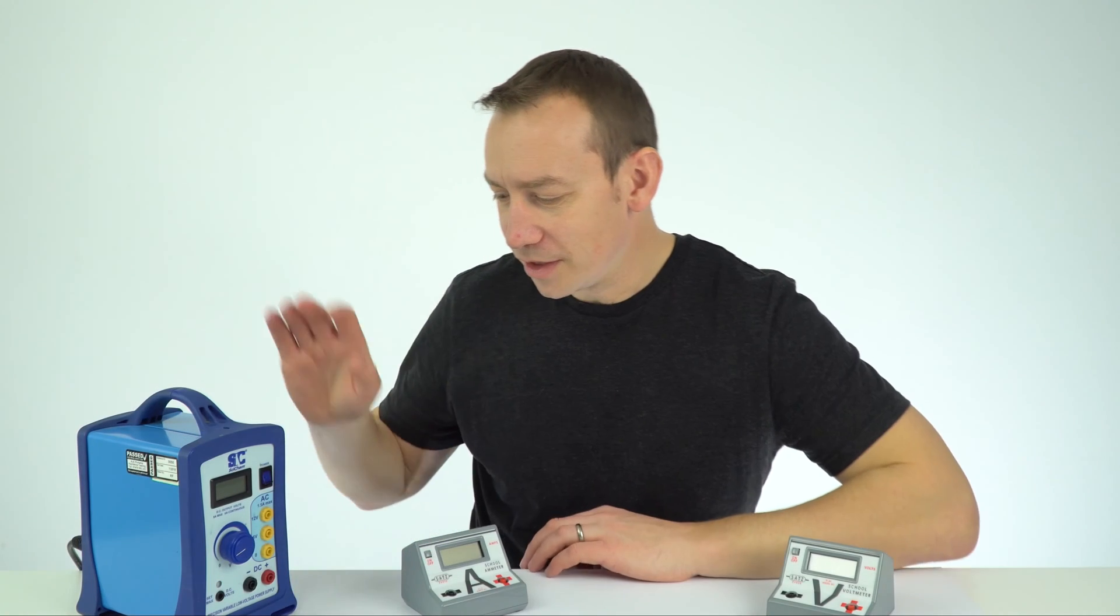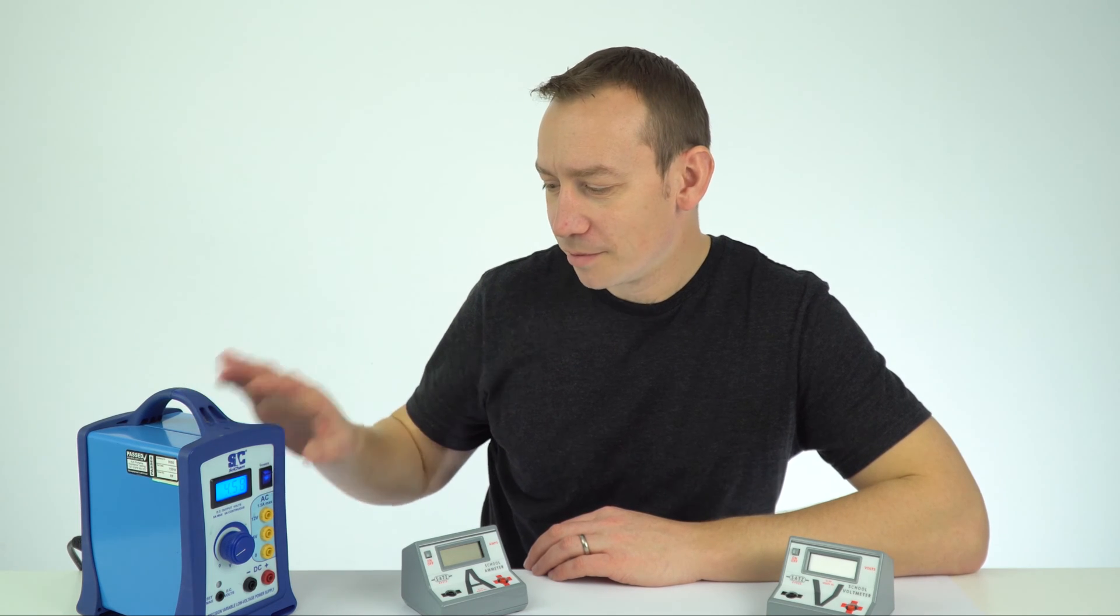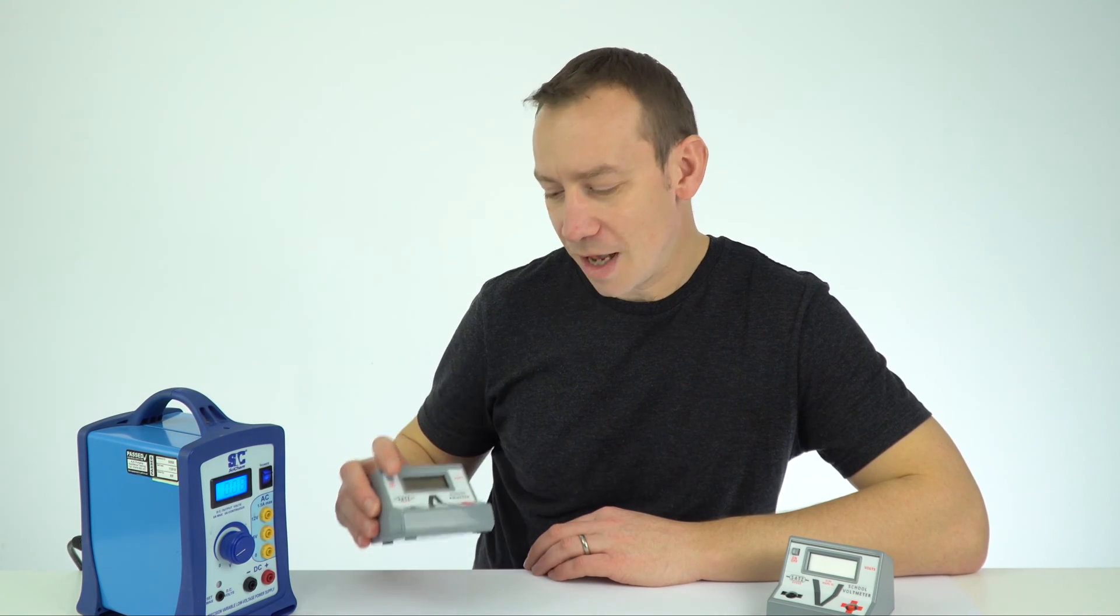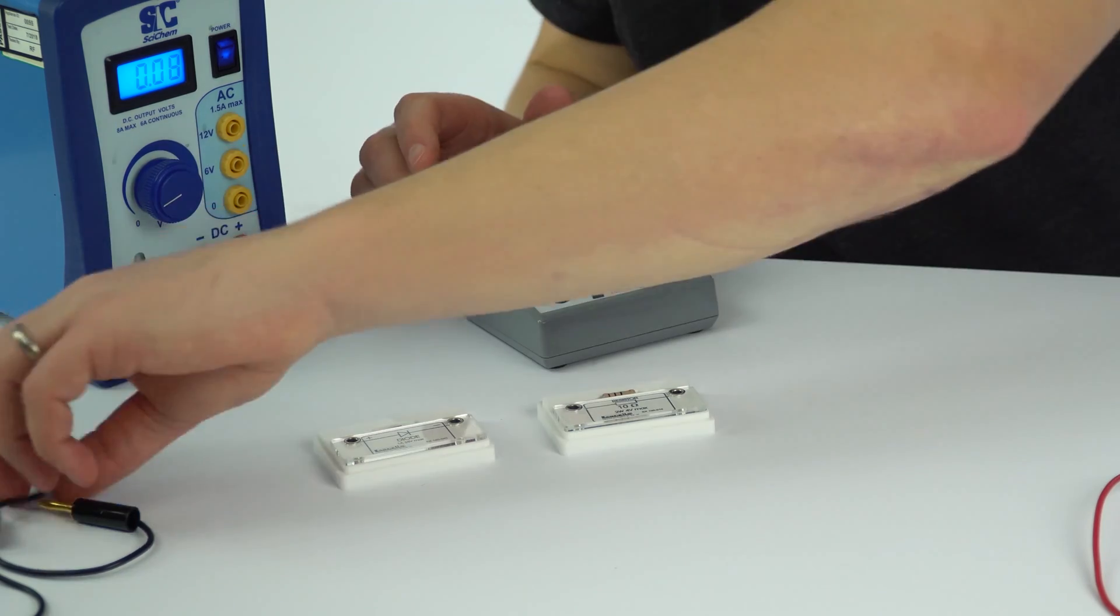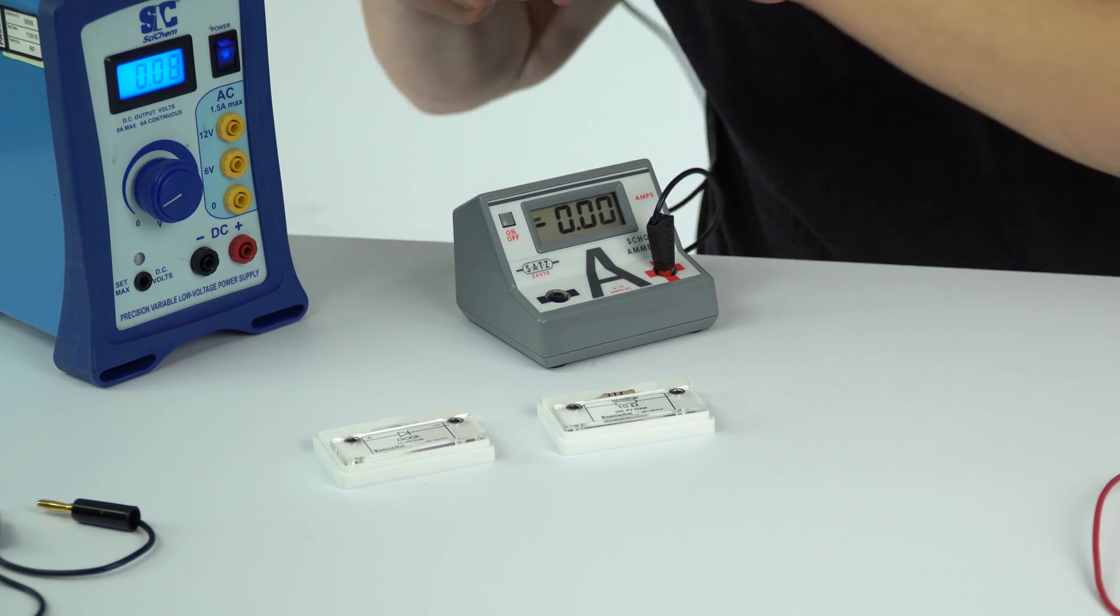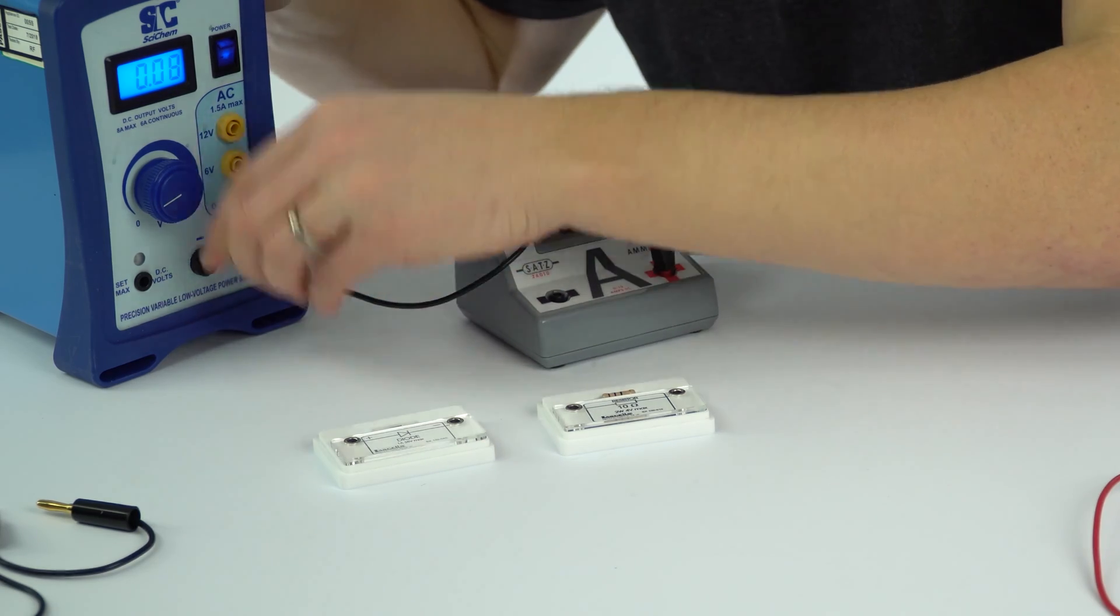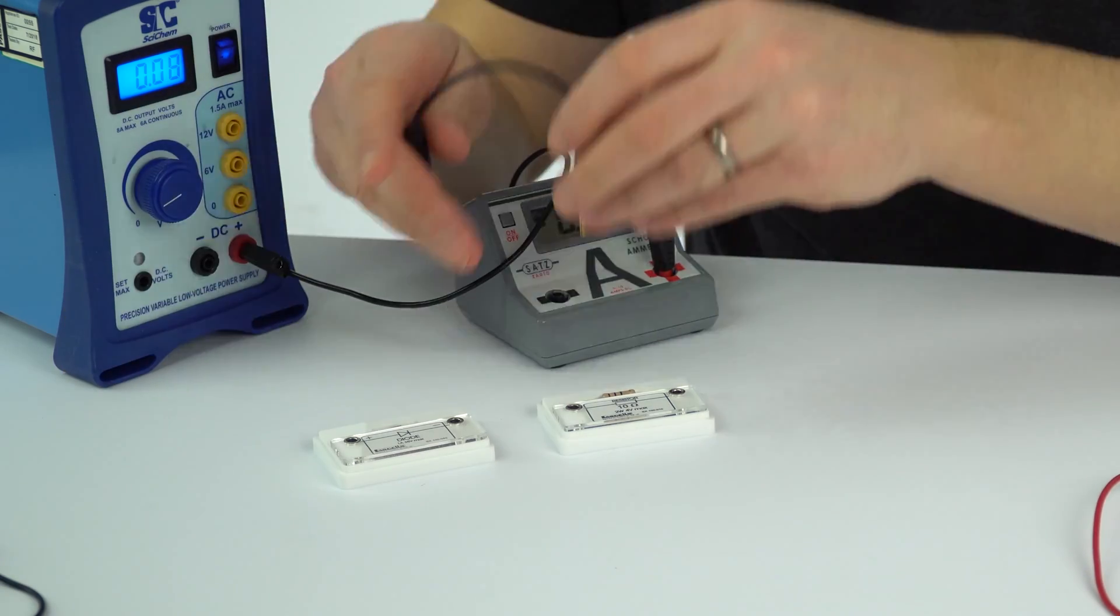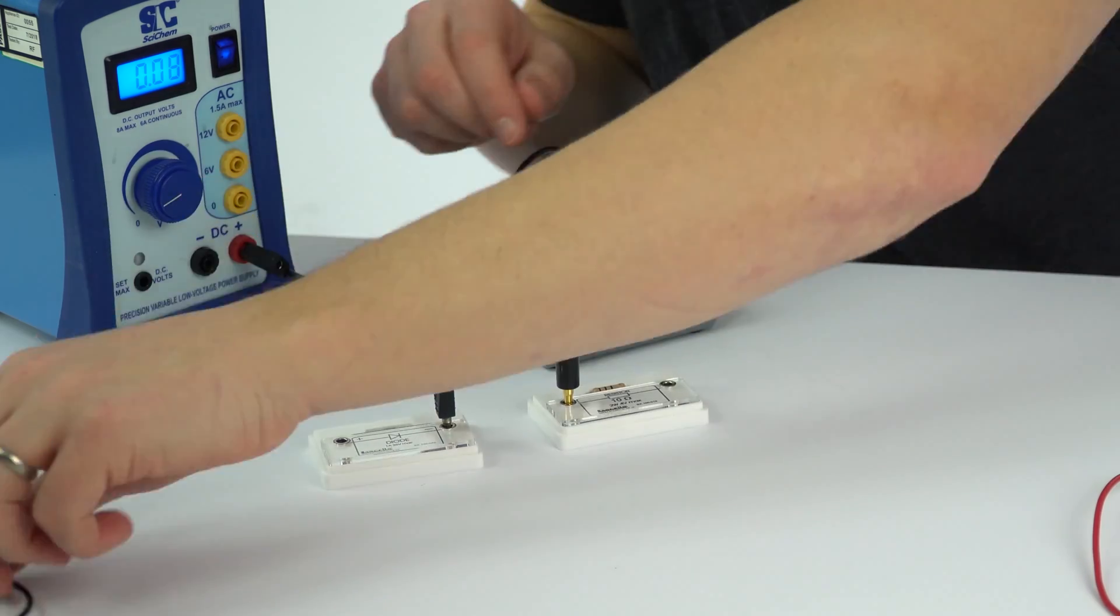So the first thing I'm going to do is, I'm using my power supply, my variable power supply. I've got an ammeter as well, so if I just turn that on, I'm going to check that this is working. I'm going to plug it into the DC terminals down here.